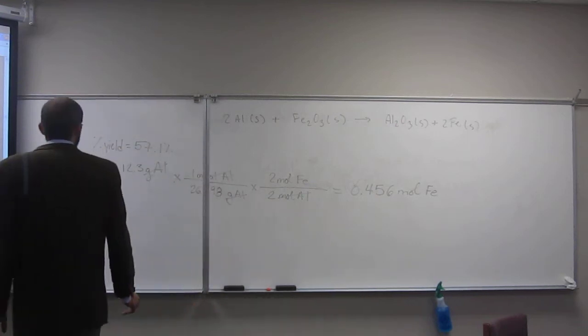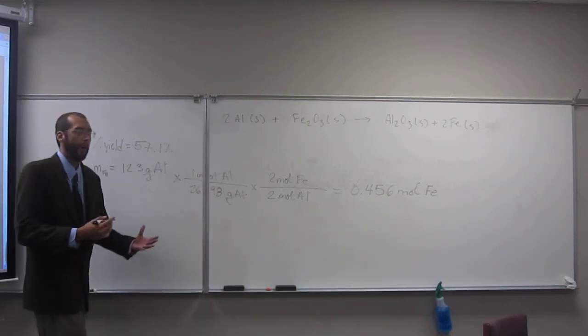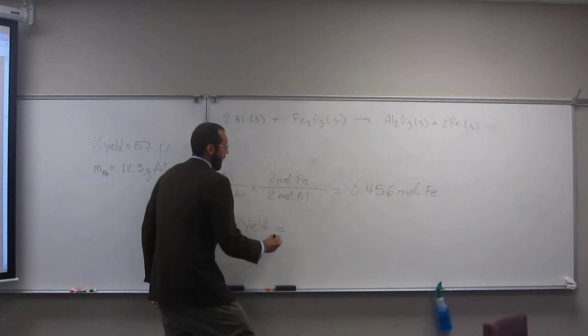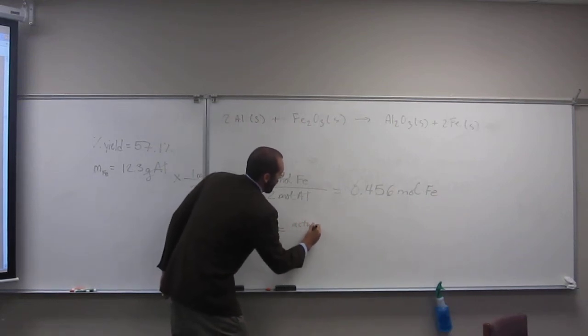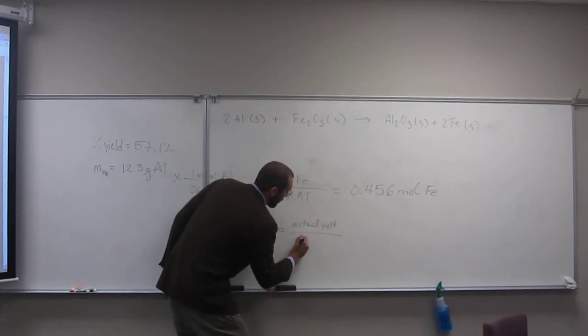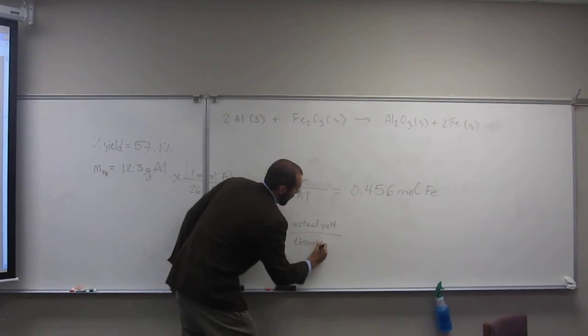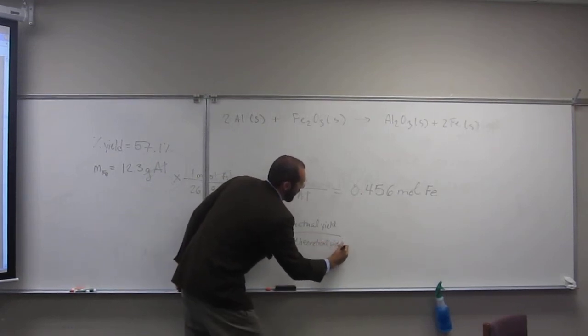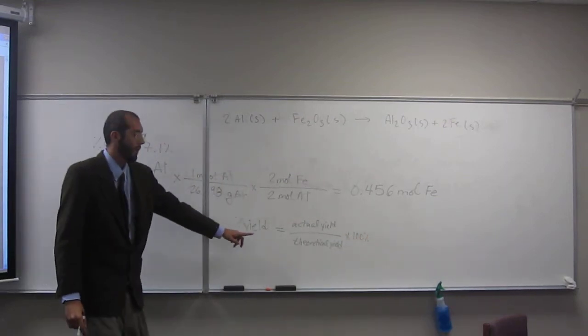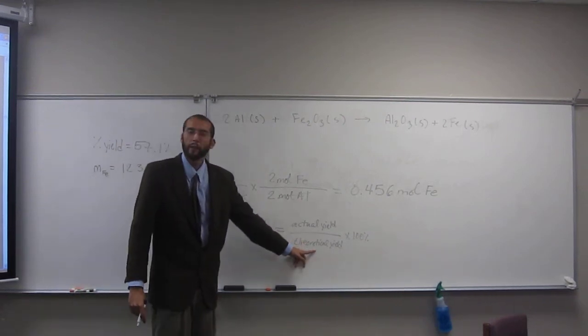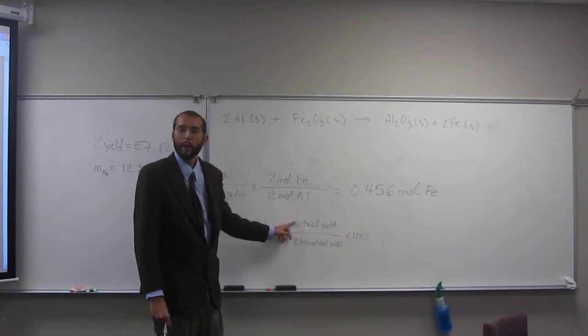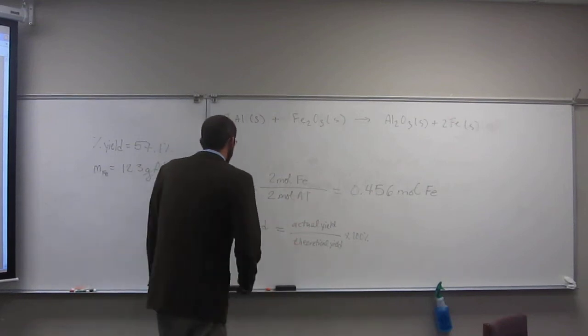So if you recall what percent is, and percent yield is no different than any other percent. Percent yield is going to be the actual yield divided by the theoretical yield times 100%. Do we know the percent yield? Yes. Do we know the theoretical yield? Yes. Do we know 100%? Yes. We don't know actual yield, right? So we're just going to have to rearrange this equation. Solve for actual yield.